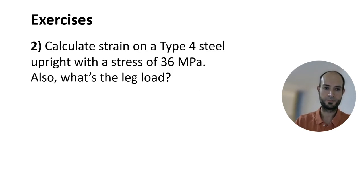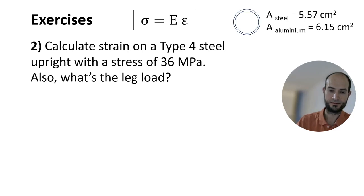Second one. Calculate strain on a type 4 steel upright with a stress of 36 megapascals. Also, what's the leg load? Remember the equation, and those are the areas of steel uprights and aluminum uprights.